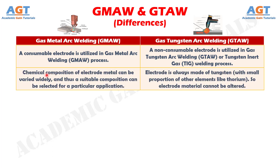Number two: in gas metal arc welding, the chemical composition of the electrode metal can be varied widely, and thus a suitable composition can be selected for a particular application. Whereas in gas tungsten arc welding, the electrode is always made of tungsten with a small proportion of other elements like thorium, so the electrode material cannot be altered.